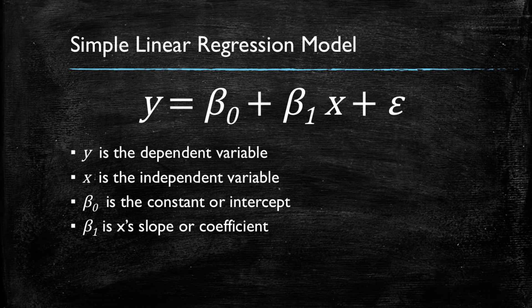Beta zero is our constant term or intercept. Meanwhile, beta one is the slope coefficient for the x. And epsilon, which is a Greek term to symbolize something that is very small, is going to be our error term, which we're trying to minimize. Now let's look at an example with actual data.